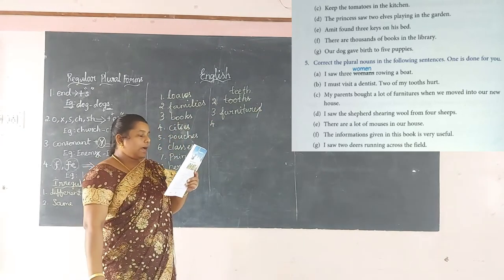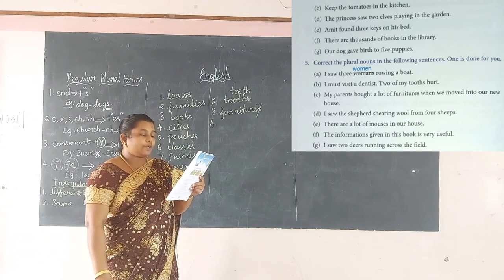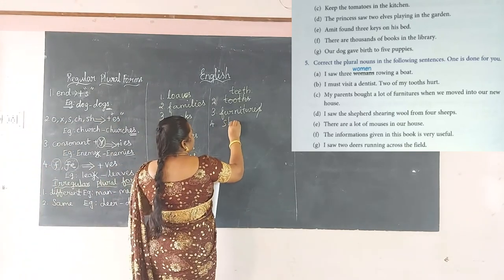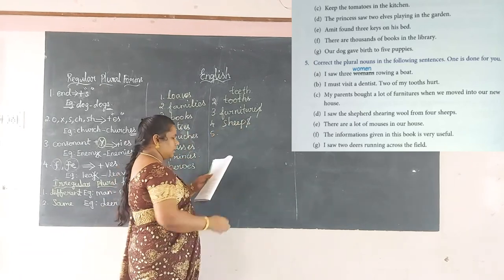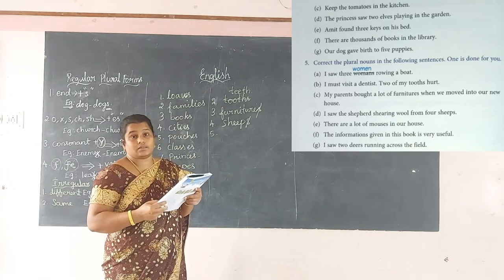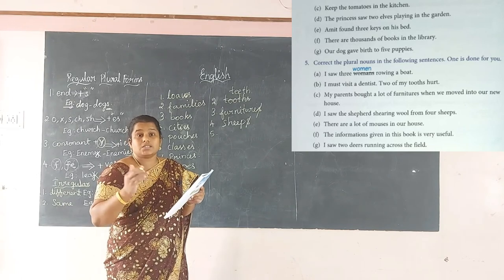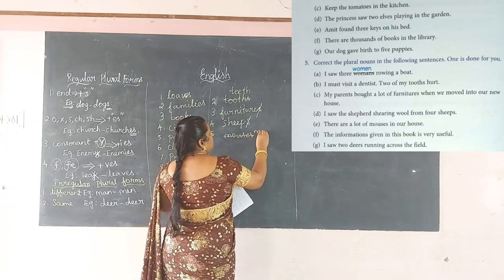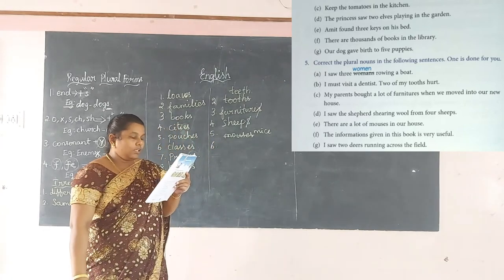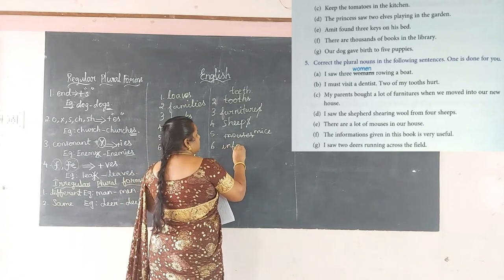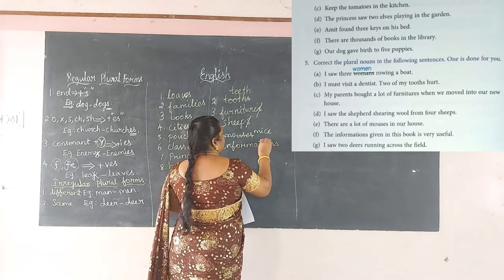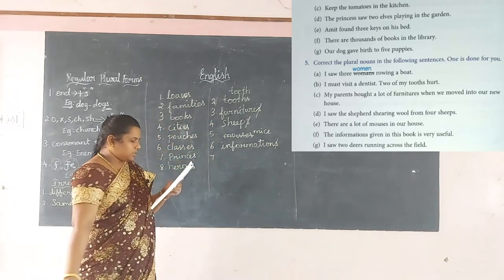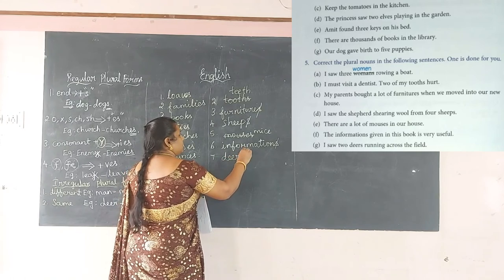Fourth: 'I saw the shepherd shearing wool from four sheeps' — 'sheep' never changes, so cancel the S — answer is 'sheep.' Fifth: 'mouses' — the plural of 'mouse' is 'mice,' not 'mouses.' Sixth: 'informations' — 'information' never takes a plural S; the answer is 'information.' Seventh: 'deals' — similarly, the correct form is 'deal' only.